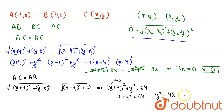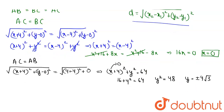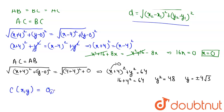Taking the square root, y = ±4√3. Therefore, the coordinates of the third vertex C are (0, ±4√3). This completes our solution.